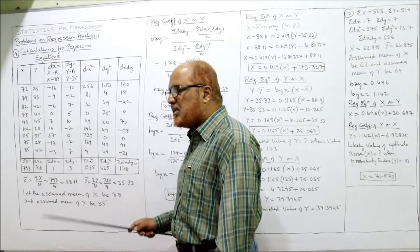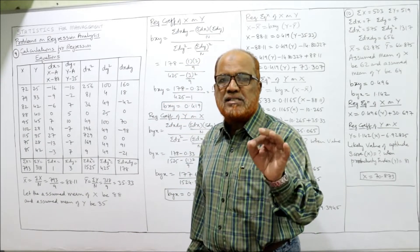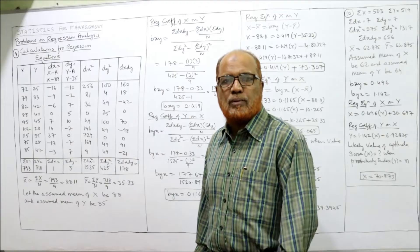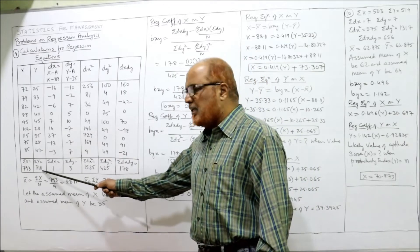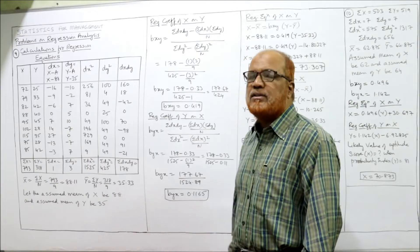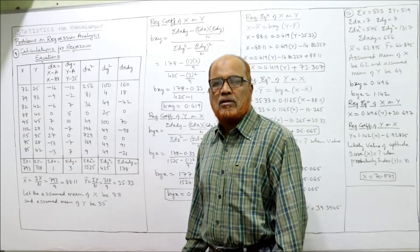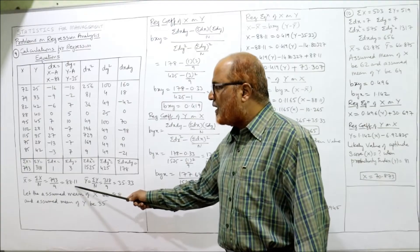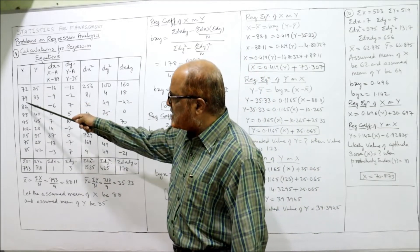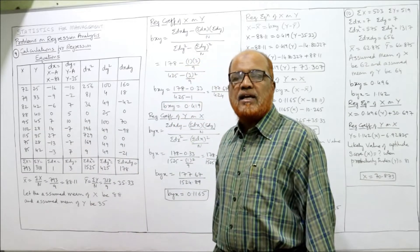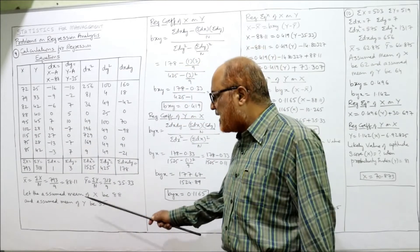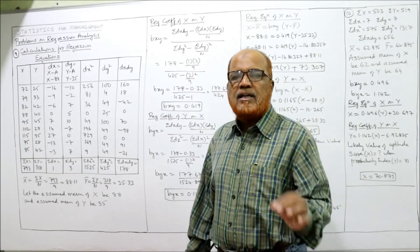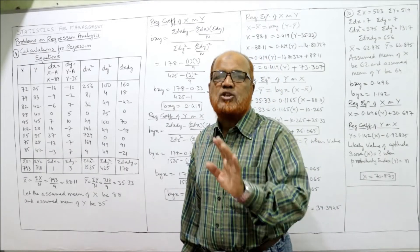793 divided by 9 gives 88.11 — the mean is in fraction. Similarly, ȳ = 318 divided by 9 = 35.33, so both actual means are in fraction. We take deviations from assumed mean. Let the assumed mean of x be 88 — actually we have 88.11, and one of the values in the x series is 88, so we can take the assumed mean of x as 88.